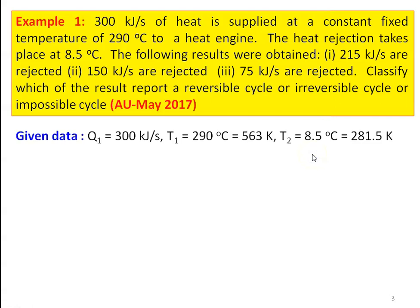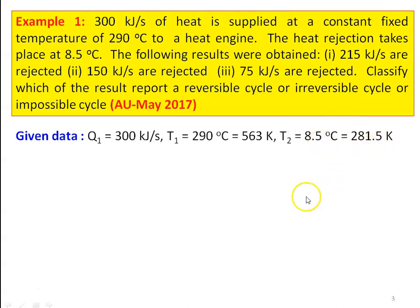Classify which of the results represents a reversible cycle, irreversible cycle, or impossible cycle. The given data: heat supplied Q1 = 300 kJ/s, corresponding temperature = 290°C = 563 K. The temperature at which heat is rejected is 8.5°C = 281.5 K.